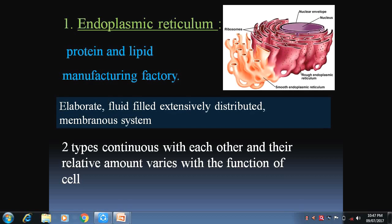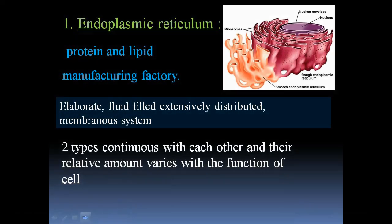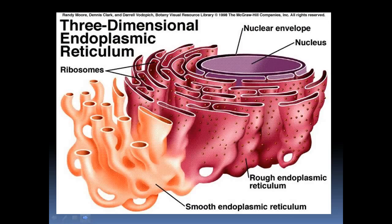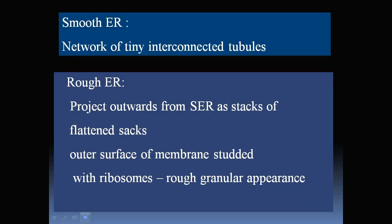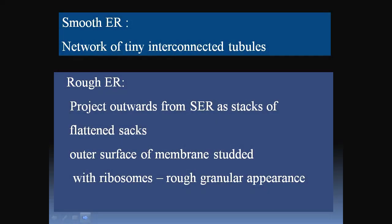The endoplasmic reticulum is divided into two parts: smooth endoplasmic reticulum and rough endoplasmic reticulum, which extends from the nucleus towards the periphery. The smooth endoplasmic reticulum is a network of tiny interconnected tubules, while the rough endoplasmic reticulum projects outwards from the smooth endoplasmic reticulum as stacks of flattened sacs.